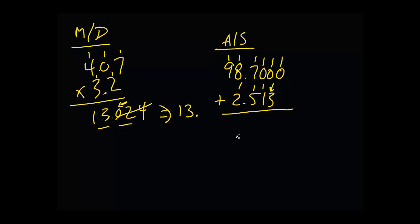Let's set them up. We get 98.7000 plus 2.513, and that's going to equal 101.213. This last number, since that's a zero, we don't include that in there obviously.